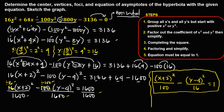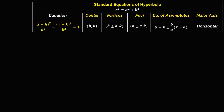In the standard equation of a hyperbola, the first denominator is a squared and the second is b squared. Since this is a horizontal hyperbola, we'll use the appropriate formulas. We need to find five values: h, k, a, b, and c.